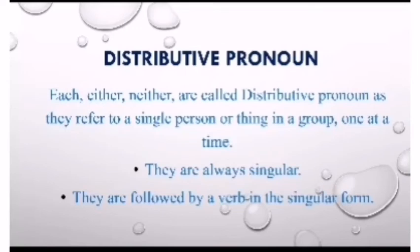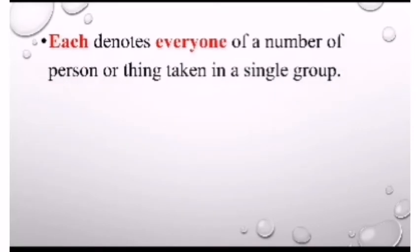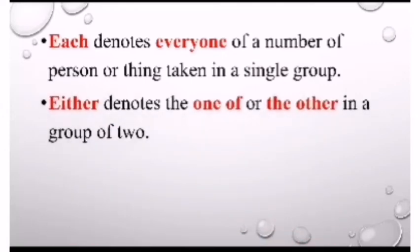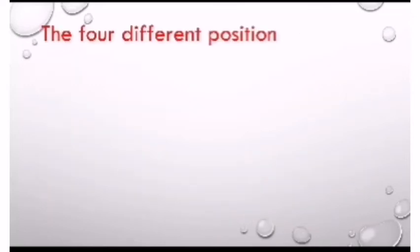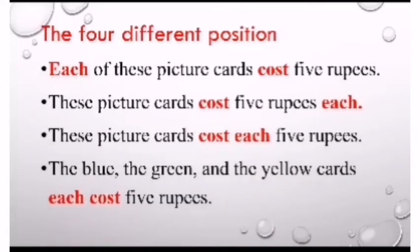Now we will learn distributive pronoun. Each, either, and neither are called distributive pronouns as they refer to a single person or thing in a group, one at a time. They are always singular and are followed by a verb in the singular form. 'Each' denotes everyone of a number of persons or things taken singly. 'Either' denotes one or the other in a group of two. 'Neither' denotes nor the one nor the other in a group of two. They can be used at different positions in a sentence and the meaning remains almost the same.